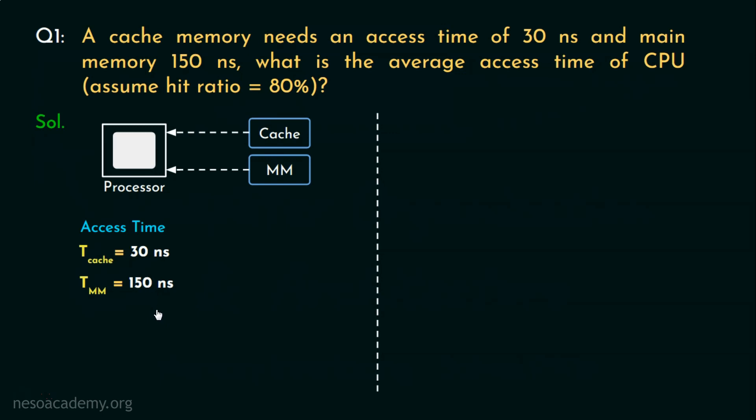Now, this is believable information. As the main memory is way bigger in size than the cache, also due to its different organization, the access time is bound to be greater than the cache. Now, coming to the hit ratio, it's already been mentioned in the question itself: 80%, that is 0.8.